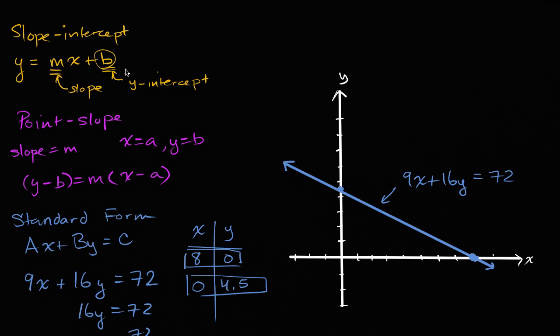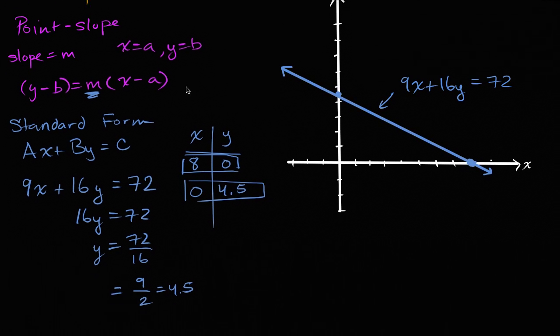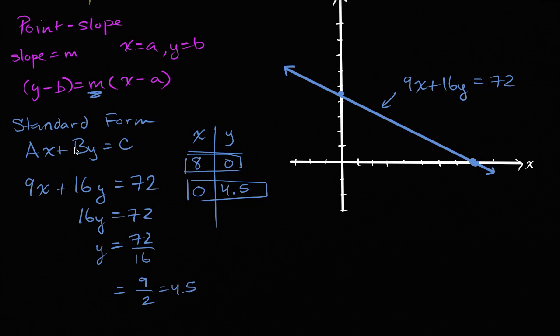If we looked at slope-intercept form, the y-intercept just kind of jumps out at you. At point-slope form, neither the x nor the y-intercept kind of jump out at you. The place where slope-intercept or point-slope form are frankly better is that it's pretty easy to pick out the slope. While in standard form, you would have to do a little bit of work.